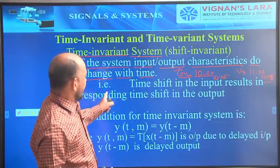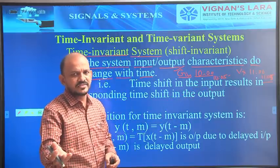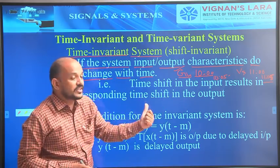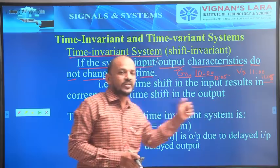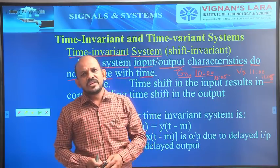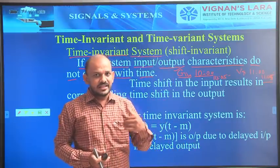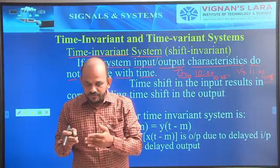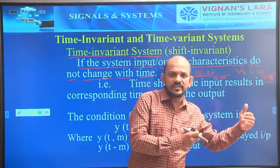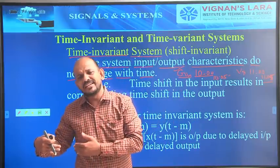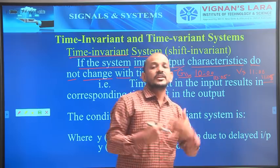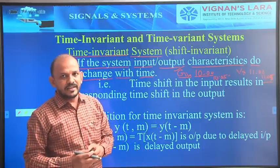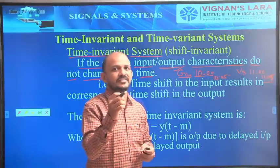The time shift in the input results in a corresponding time shift in the output. If there is any delay or advance in the input, that results in a corresponding delay or advance in the output. If there is a delay of 5 minutes in the input, then the output will be delayed by 5 minutes. If there is an advance of 5 minutes in the input, the output will also be advanced by 5 minutes. Those types of systems are time invariant systems.